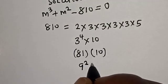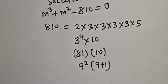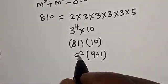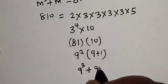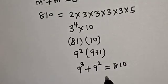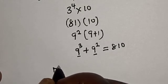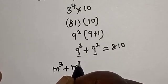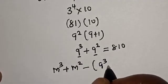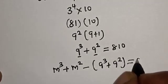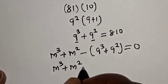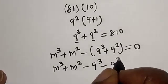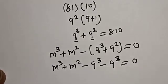And 81 is 9 squared, multiplied by 10, which is 9 plus 1. Let's open this bracket: we have 9 squared times 9, that is 9 cubed, plus 9 squared times 1, that is 9 squared. And this is equal to 810. Now let's replace 810 by 9 raised to power 3 plus 9 squared. Then we have m raised to power 3 plus m squared minus 9 raised to power 3 plus 9 squared is equal to 0.